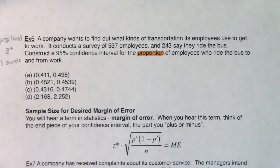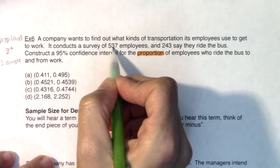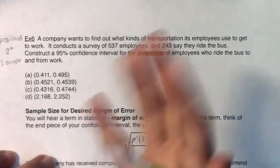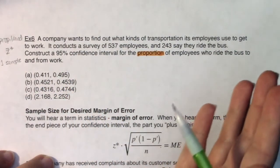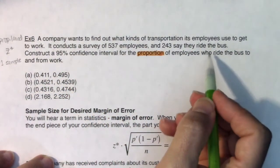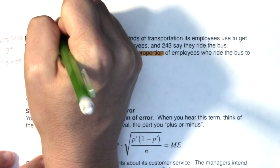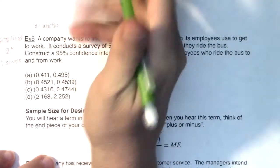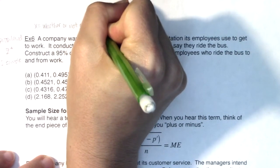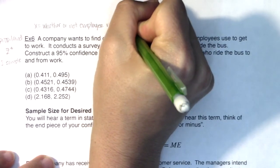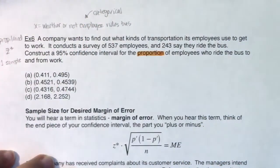In terms of the variable, start with what is the variable. Imagine you are one of these 537 employees. What are they asking you about? When they include you in the survey, what they're asking you is what's your mode of transportation, and they're keeping track of whether or not you ride the bus. So my variable here is whether or not employee rides the bus. You can hear that this variable is categorical, and that's another clue that we're in proportion land.